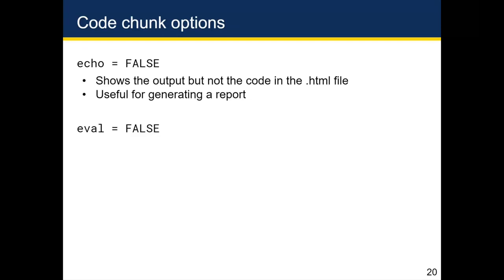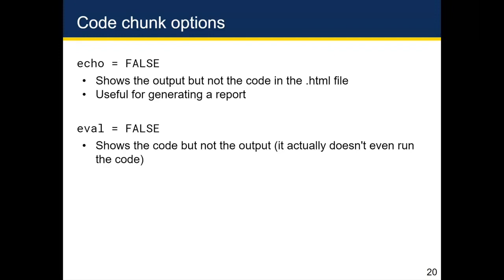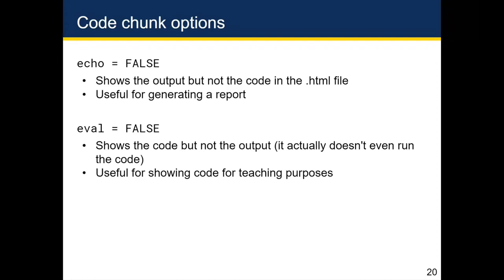Then there's eval equals false. Eval equals false shows the code but not the output — the reverse of echo equals false. As the name suggests, your code doesn't actually run, so it doesn't even get evaluated. This is really useful for showing code for teaching purposes, such as when you want to show someone the code you used without actually running it.